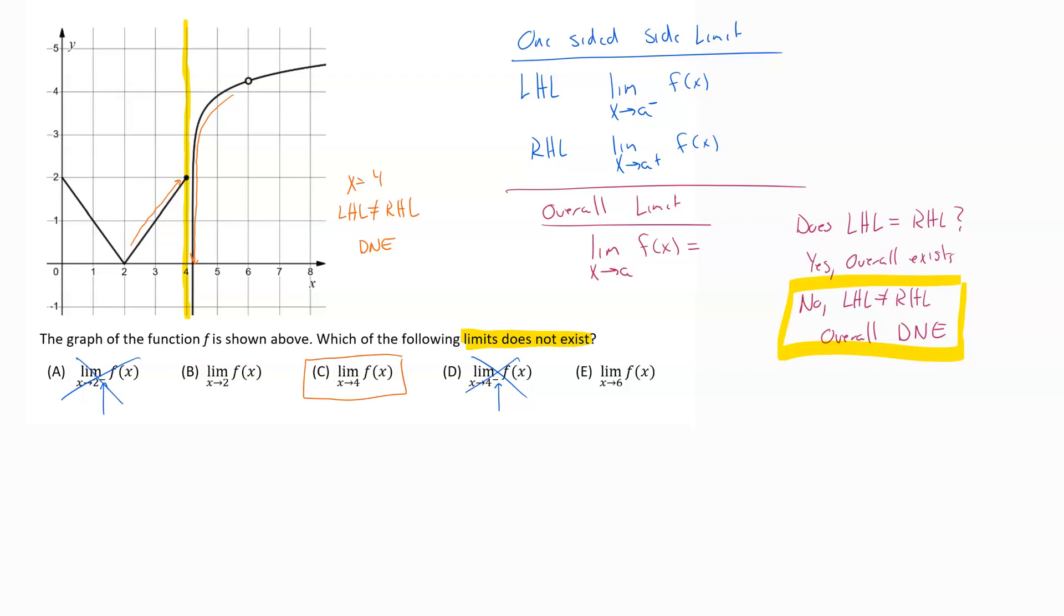If we wanted to quickly kind of check the other ones just to see why they do work, this one's saying limit as x approaches 2. Well if I come over here I always sort of draw what I call my wall at whatever that x value is. So if I'm drawing my wall at x equals 2, I can see that my left-hand limit approaching that wall from the left, it looks like I'm headed at the wall, I'm going to hit the wall at y equals 0. And if I approach that wall from the right I'm also headed to that same value y equals 0. So here the overall limit does exist and that overall limit would equal 0.